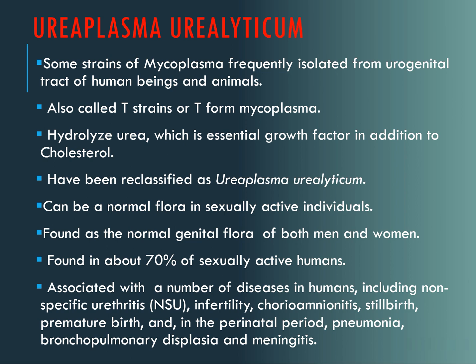The cousin Ureaplasma urealyticum: these are strains of mycoplasma frequently isolated from the urogenital tract. Initially they were called T-strains or T-form of mycoplasma. Now they have been reclassified as Ureaplasma. The species is urealyticum because they can hydrolyze urea, which is essential for the growth of this bacteria. They also require polyserum in the medium. They can be normal flora in sexually active individuals, found in the genital tract of both men and women.